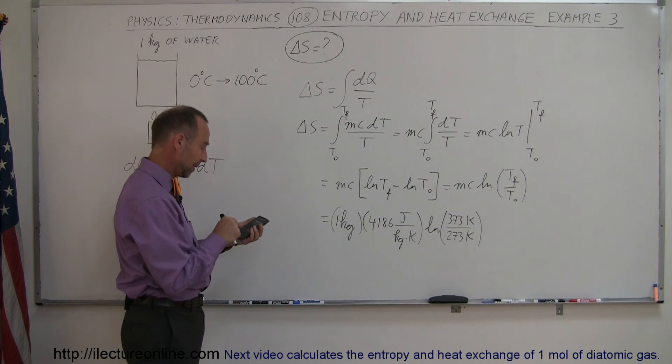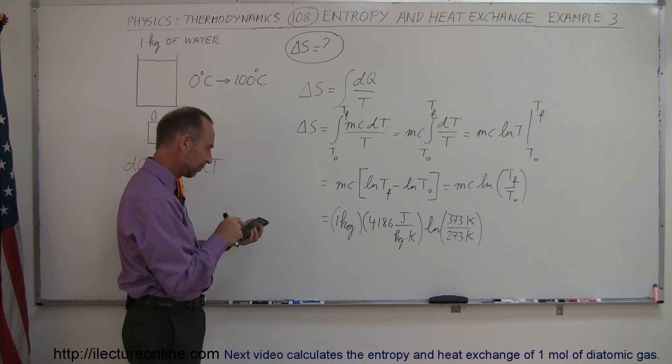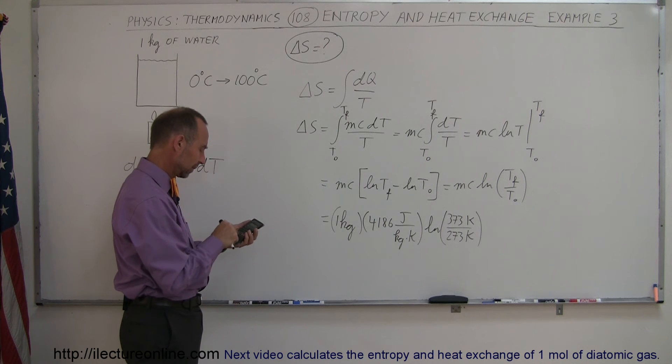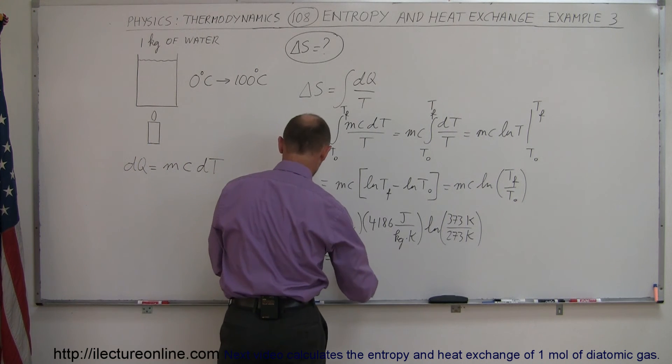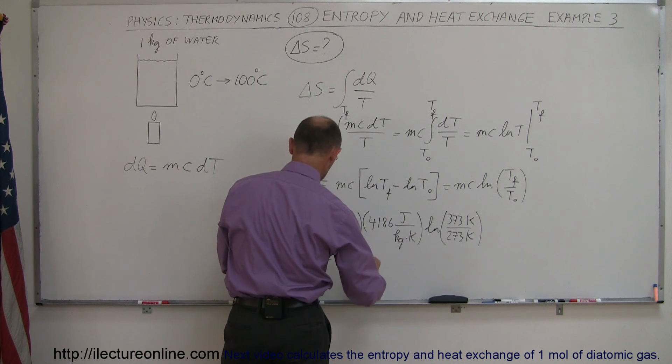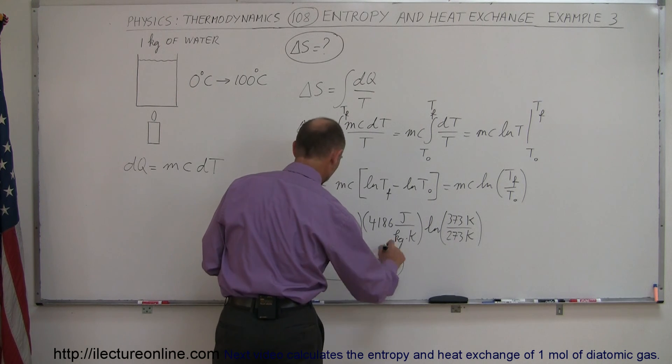So 373 divided by 273, take the natural log of that and then multiply that times 4,186, and we get an entropy change of 1,306 joules per Kelvin and that will be your delta S.